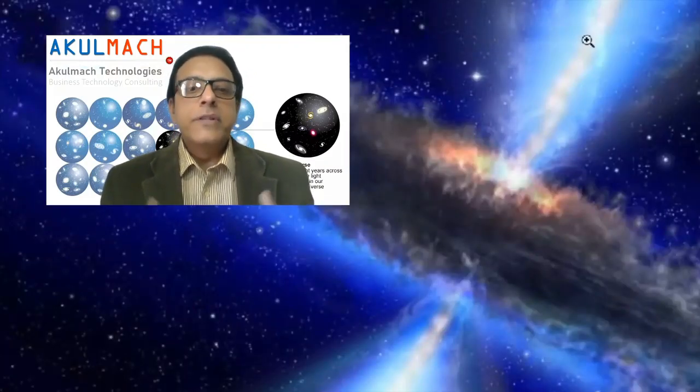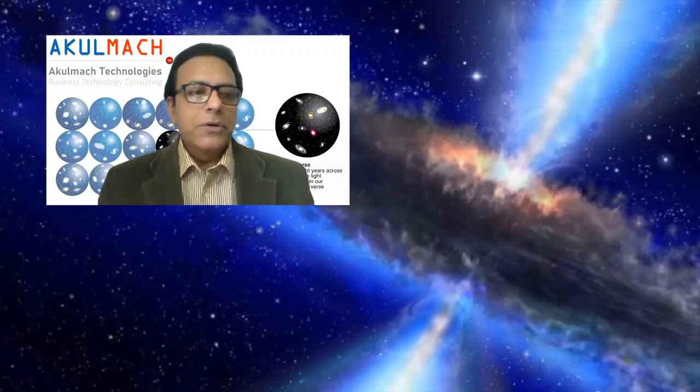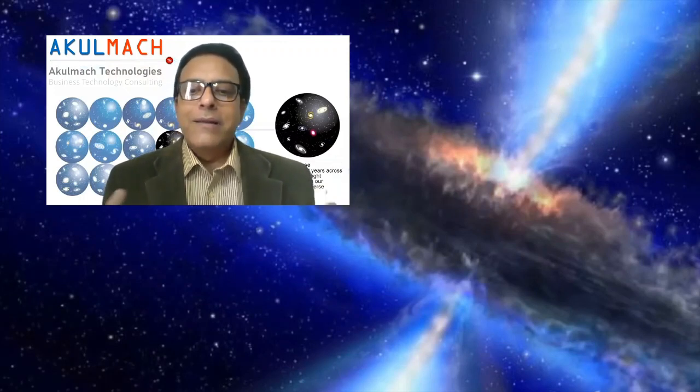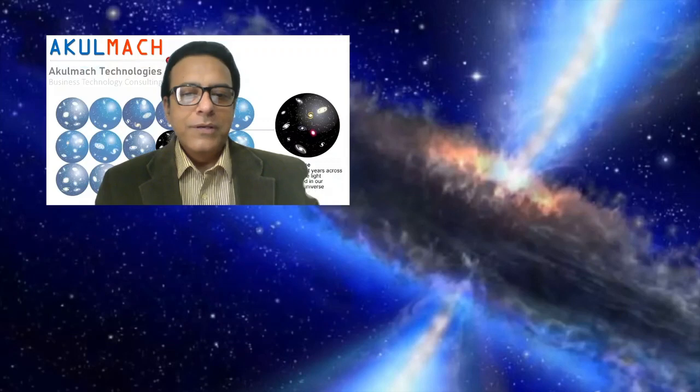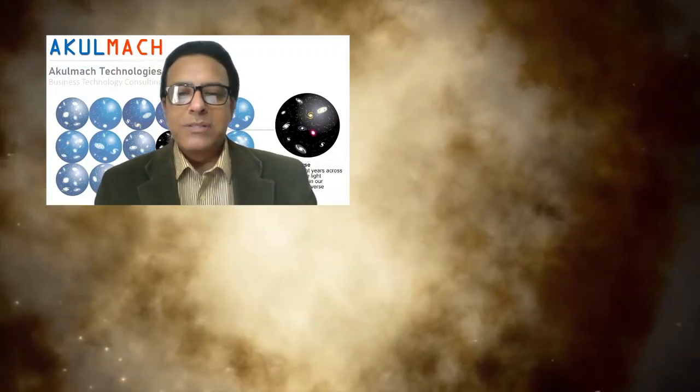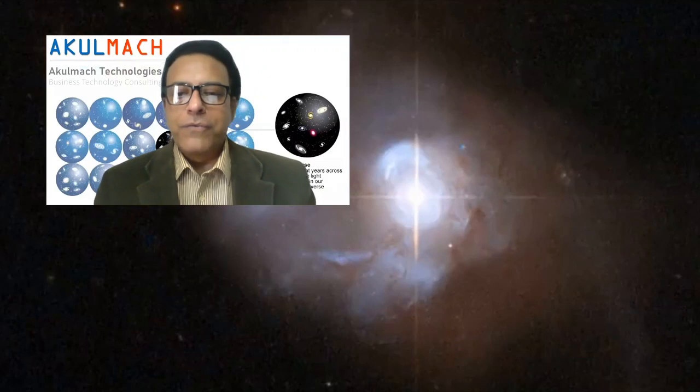But when they are pointed towards Earth, that means we are seeing the entire energy coming towards us. We call them, we have given them another name, blazar, because the entire energy we see from the center of the jet is pointed towards in the direction of Earth.